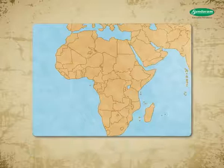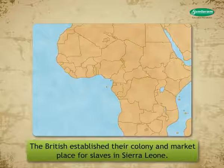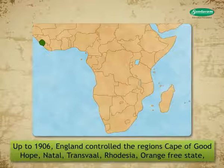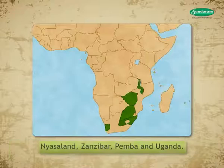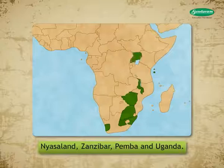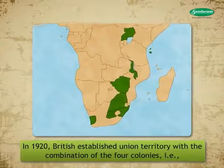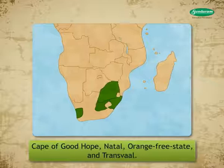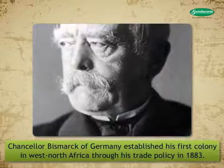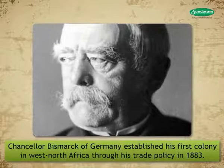The British established their colony and marketplace for slaves in Sierra Leone. Up to 1906, England controlled the regions of Cape of Good Hope, Natal, Transvaal, Rhodesia, Orange Free State, Nyasaland, Zanzibar, Pemba and Uganda. In 1920, the British established a Union territory with the combination of four colonies: Cape of Good Hope, Natal, Orange Free State and Transvaal. Chancellor Bismarck of Germany established his first colony in West-North Africa through his trade policy in 1883.